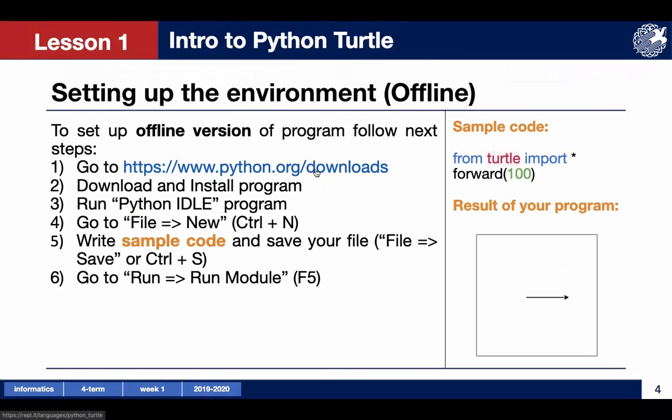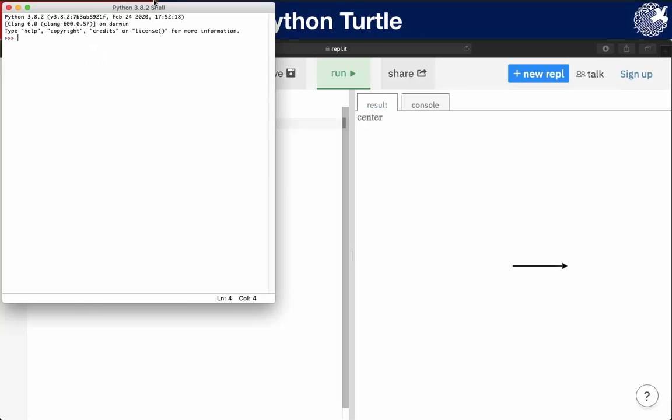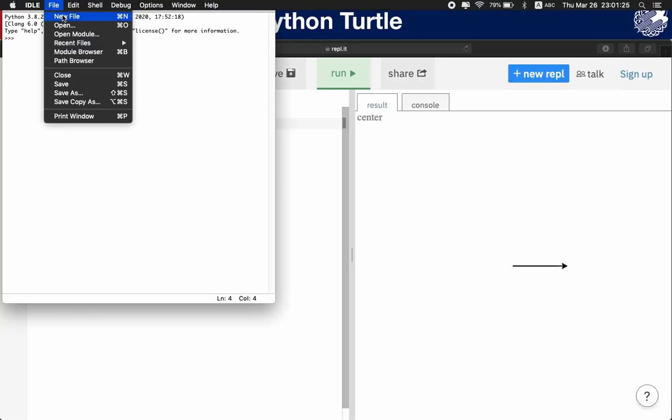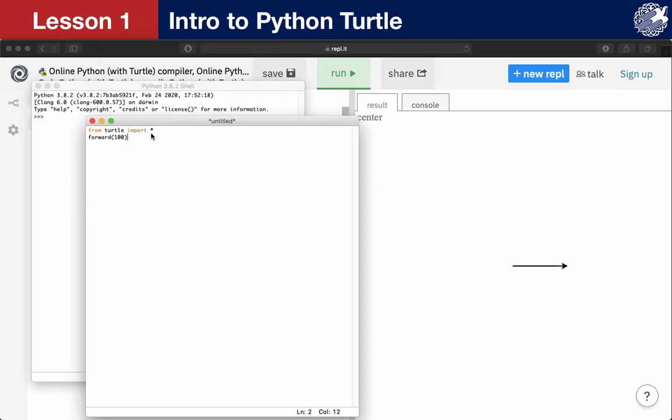To set up the offline version of the program, first you must download the program by following this link and then install it. I have already downloaded and installed Python, so I'm going to skip the first two steps. Next, run Python idle program and then create a new file by pressing Ctrl+N buttons on your keyboard or by going to the menu and pressing file, then new.